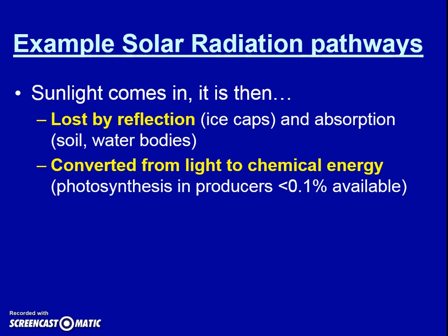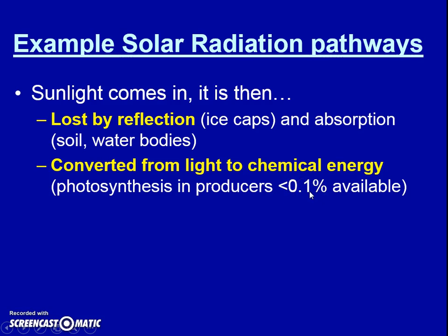Some sunlight is absorbed. If it makes it past those areas and actually hits a plant, the plant will do photosynthesis — converting light energy to chemical energy and making glucose. But amazingly, out of 100% of the sun's light coming in, only less than 0.1% of all that energy actually gets used by plants across the whole world. That means 99.9% is not even used by plants. It's becoming heat or getting reflected — amazingly inefficient.